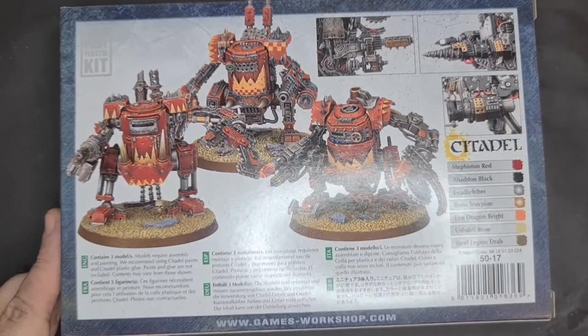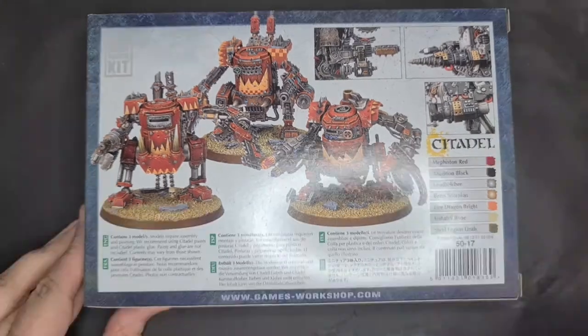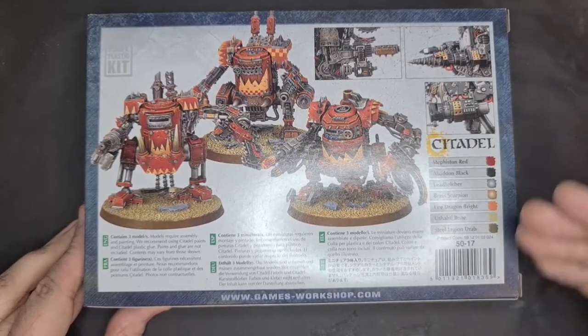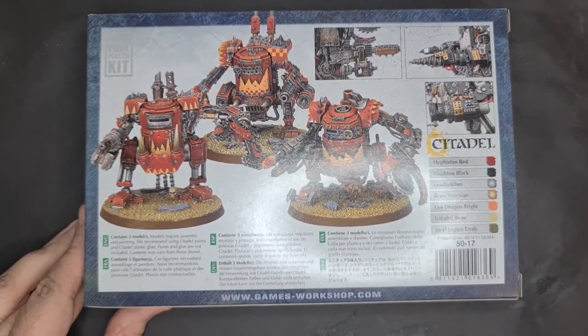Models require assembly and painting. We recommend using Citadel paints and Citadel plastic glue. Paints and glue are not included. Contents may vary from those shown. Then we got our Citadel suggested paint scheme: Mephiston Red, Abaddon Black, Leadbelcher, Brass Scorpion, Fire Dragon Bright, Ushabti Bone, and Steel Legion Drab.